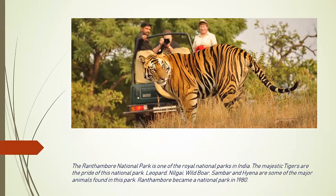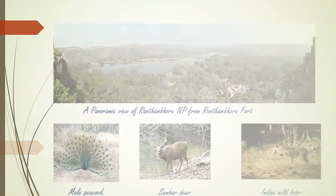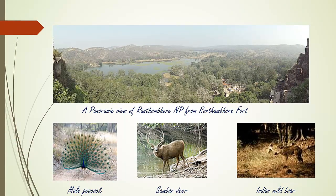Next, Ranthambore National Park from Rajasthan. It is one of the royal national parks in India and is pride to majestic tigers. Ranthambore National Park was established in 1980. Examples of wildlife found here include Leopard, Nilgai, Wild Boar, Sambar, and Heron. The park offers panoramic views and is also home to the male peacock, Sambar deer, and Indian Wild Boar.